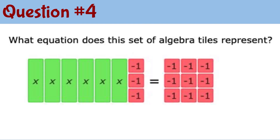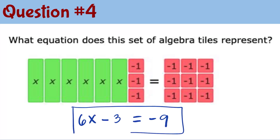Question number 4: we have 6x tiles on the left side, so we have 6x, and here we have 3 negative 1 tiles, so that means minus 3. On the right, there are 9 negative tiles, so we have negative 9. So 6x minus 3 equals negative 9 represents this algebra tiles equation.